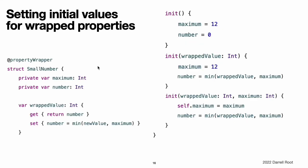Setting initial values for wrapped properties: the code in previous examples set the initial value for the wrapped property by giving number an initial value in the definition of TwelveOrLess. Code that uses that property wrapper cannot specify a different initial value for a property that is wrapped by TwelveOrLess. For example, the definition of SmallRectangle could not give height or width initial values.